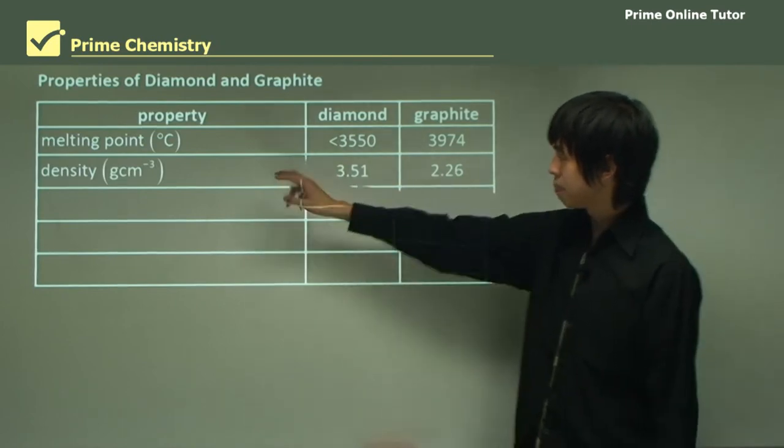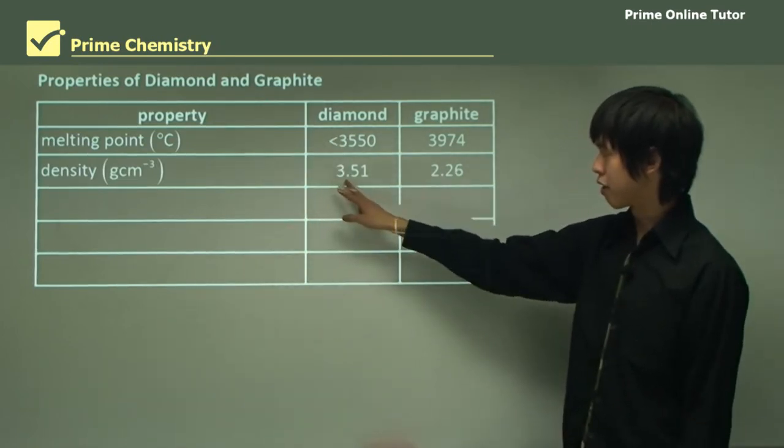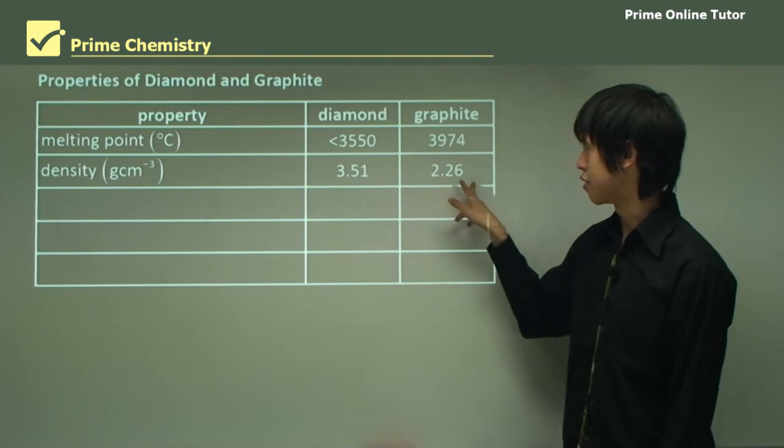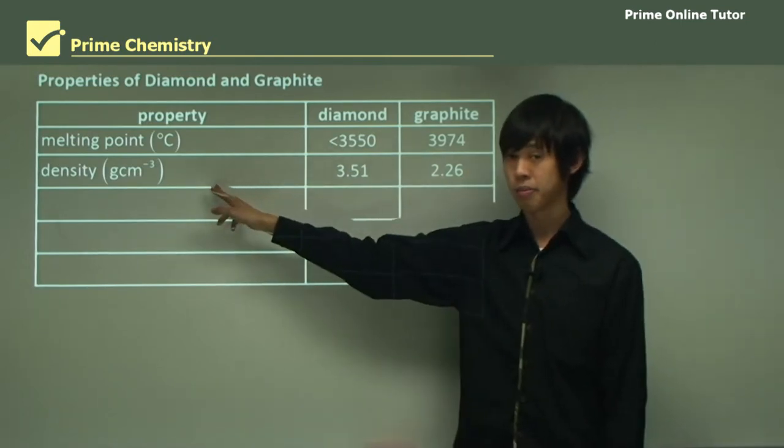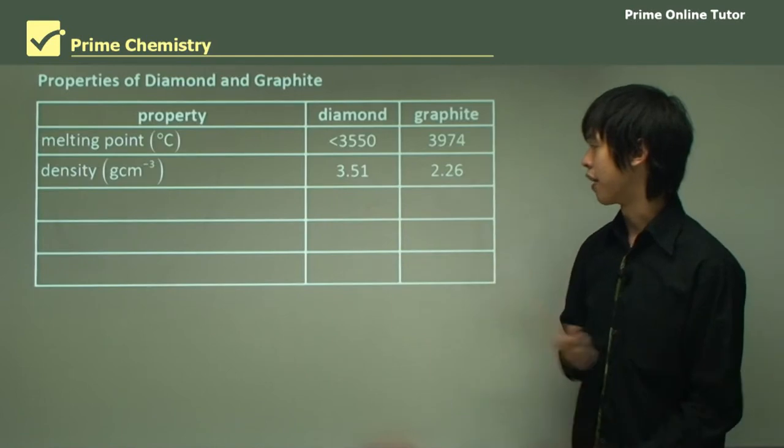The density, it's about 3.51 as opposed to 2.26 grams per centimeter cubed. So diamond is slightly more dense than graphite.